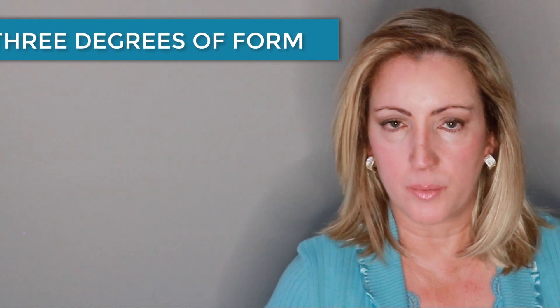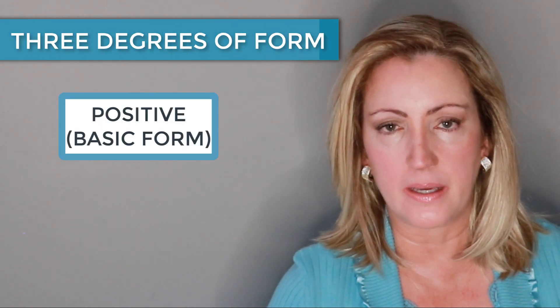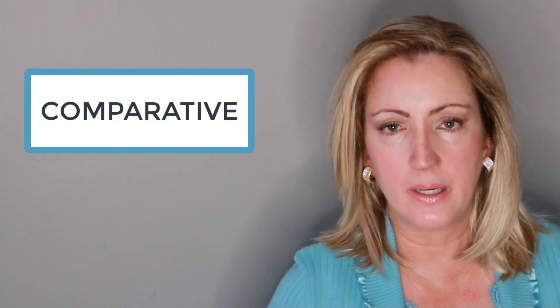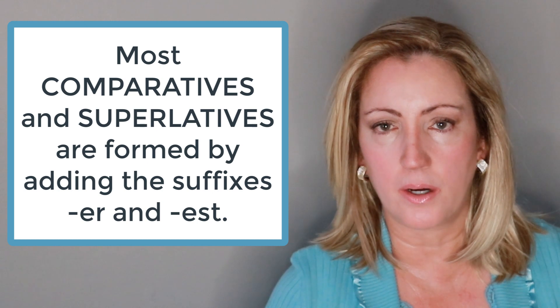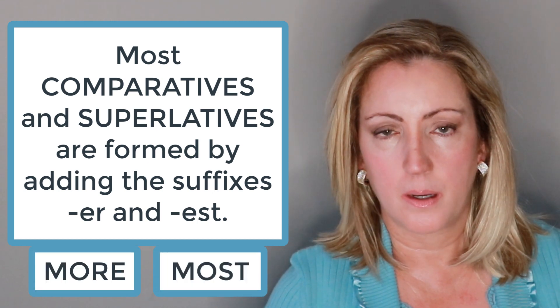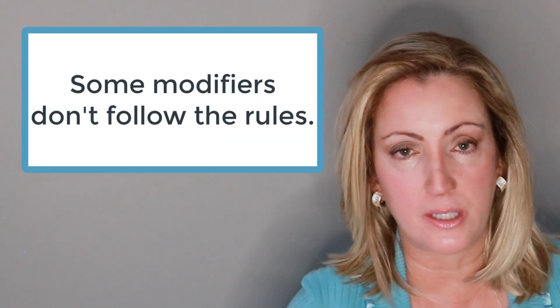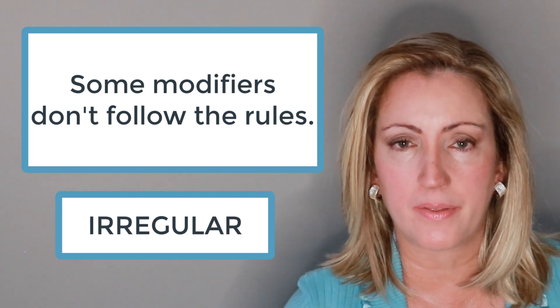We learned in a previous video that most adjectives and adverbs have three degrees of form when used to compare two or more things. That is, the positive, the comparative, and the superlative. Most comparatives and superlatives are formed by adding er or est, or using the adverbs more or most. But there are cases where this is not so. There are some modifiers that don't follow the rules and are considered irregular. We are going to learn about these today.